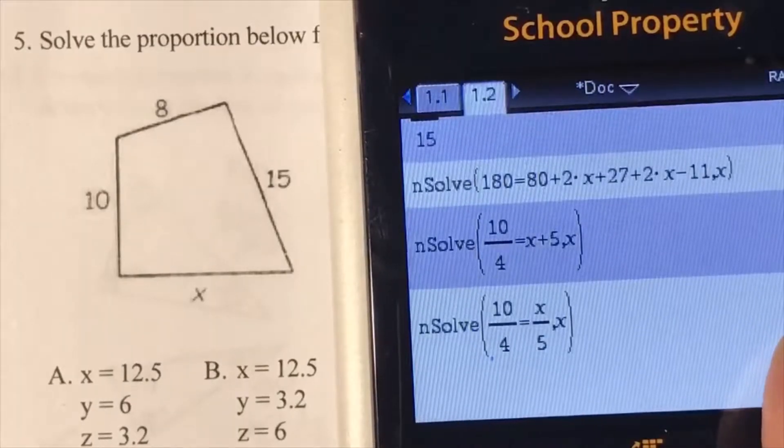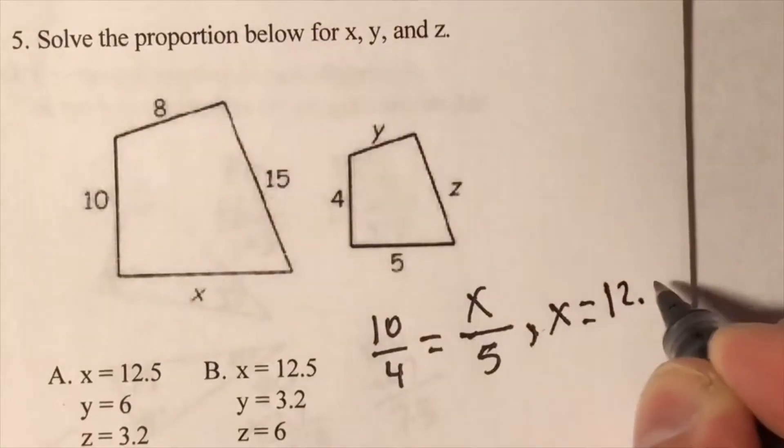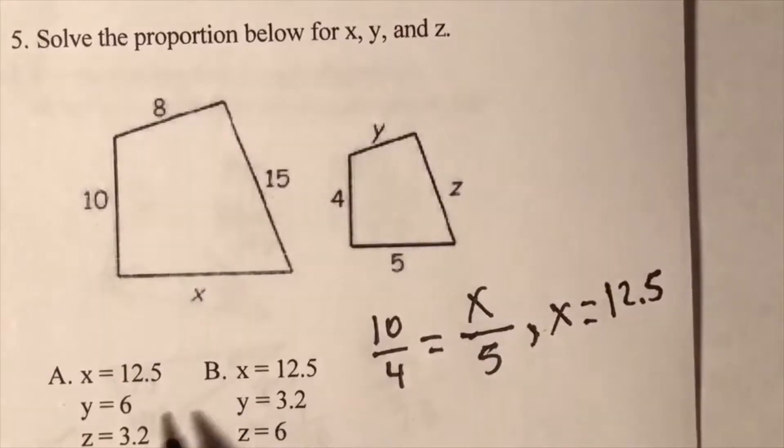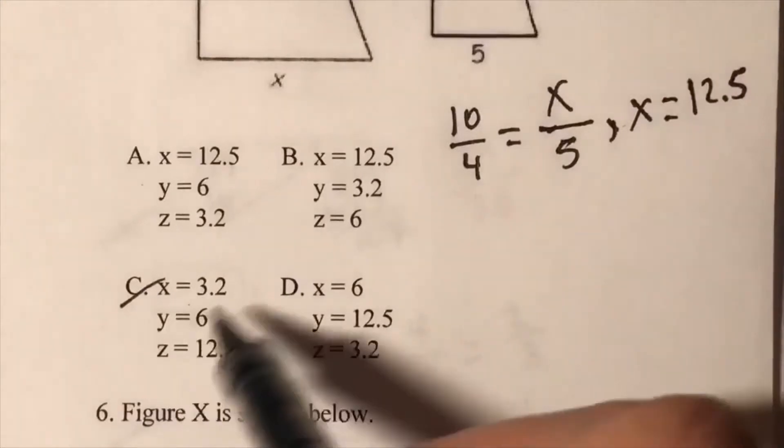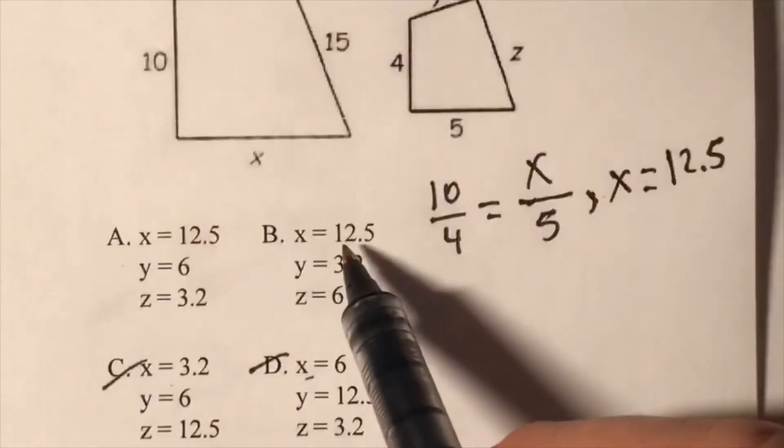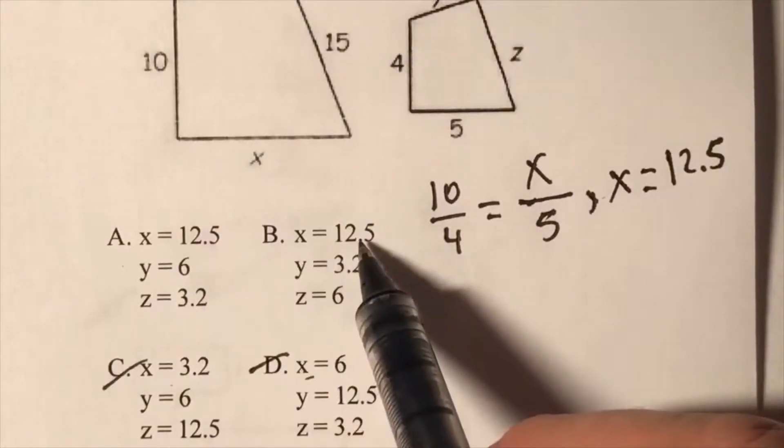So x equals 12.5. Now we can eliminate C and D because x is supposed to be 12.5. We're down to A and B.